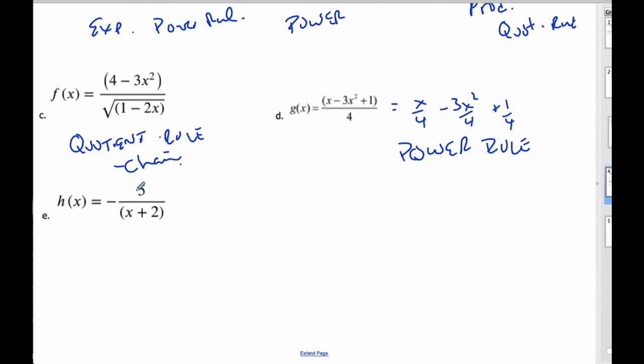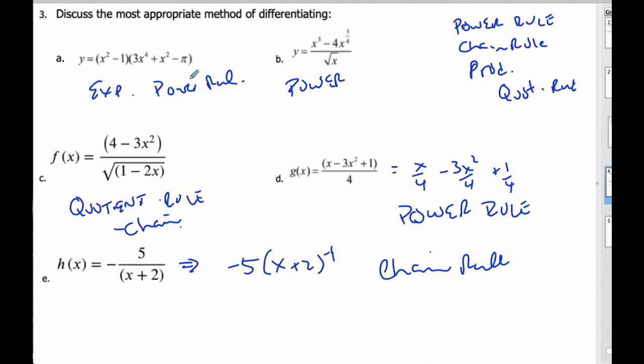Finally, I have h of x, I have negative 5 over x plus 2, and I could use quotient rule, but if I think about this, if I rewrite this to negative 5, x plus 2 to the minus 1, rewriting it and then doing the chain rule is a far better approach, because it's an easier derivative to take. It often is worth our time to look at the problem first, analyze it before we decide blindly on which method is most appropriate.